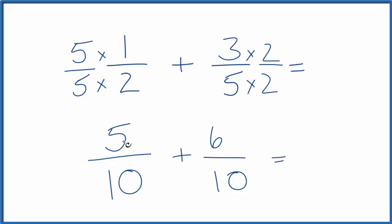Now we can just add these together. 5 plus 6 is 11, and then we bring the 10 across, 11 tenths. So 1 half plus 3 fifths, that's 11 tenths.